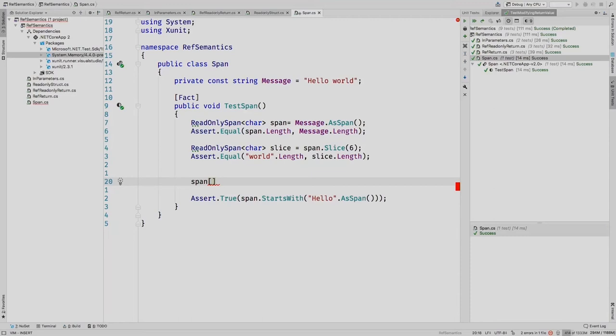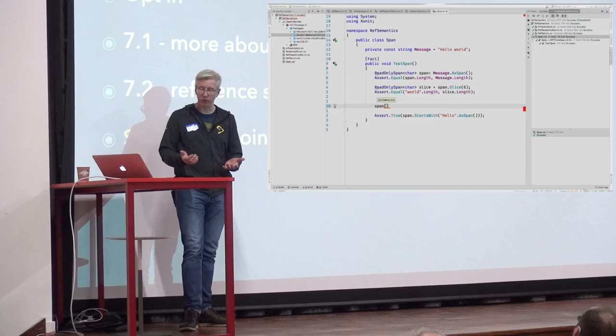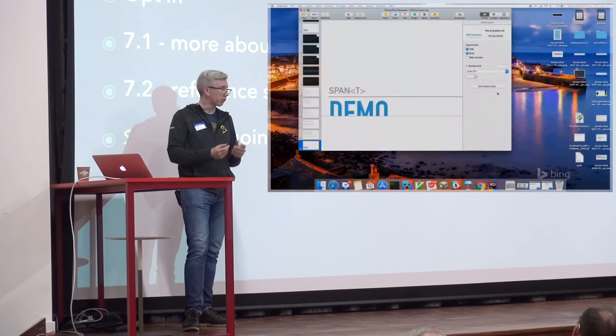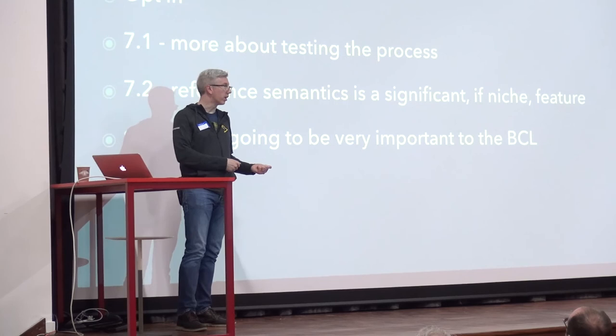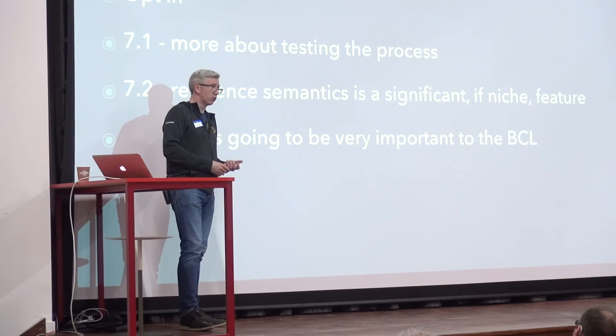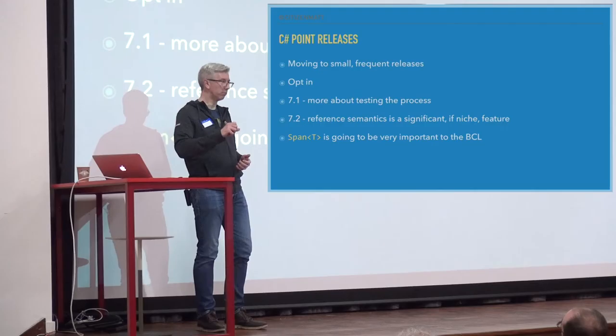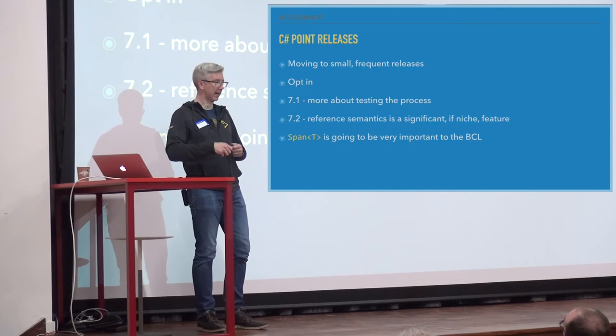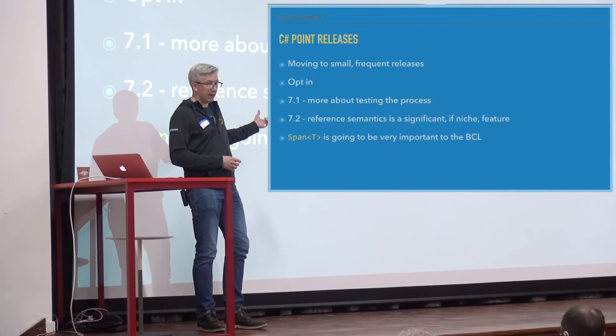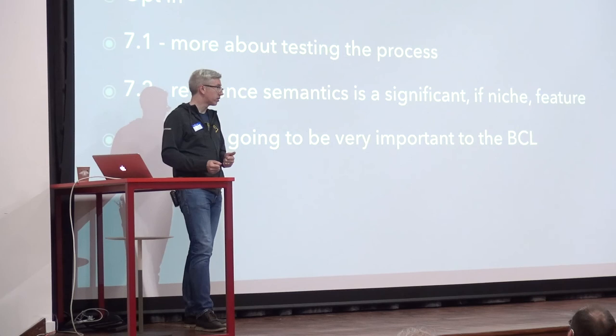So that's C# point releases. To wrap up: it's moving to small, frequent releases; it's opt-in — you start with C# 7.0 and have to opt in to 7.1 and 7.2. I was very mean to say it was boring — they're not really boring, just kind of small. 7.1 was really more about testing the process of doing minor releases and servicing them. And 7.2 — the whole reference semantics thing is brilliant, really really useful, a very significant feature. It is potentially very niche; you and I might not ever really use it, but we will benefit from it.